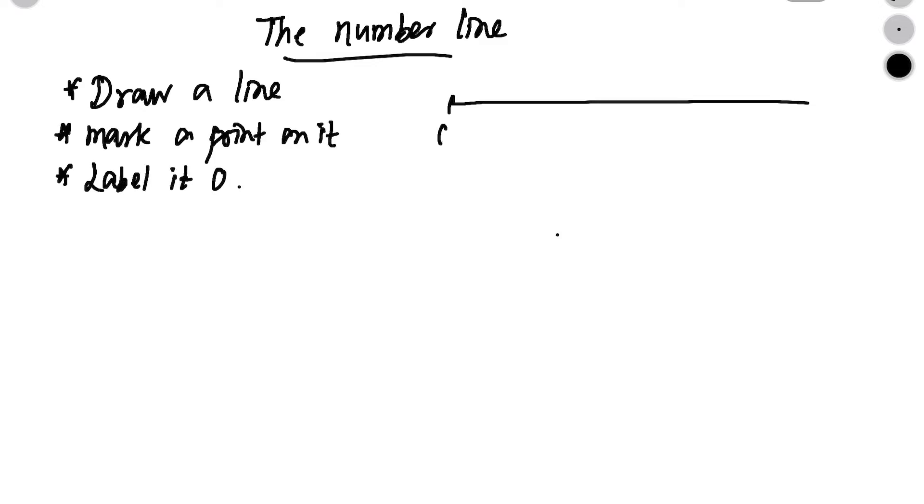Next, we are going to see number line. First, we will see how we will be drawing a number line. So first, draw a line using a scale. Then, in the left-hand side corner, mark a point and label it 0. Next, to the right of 0, mark another point and label it 1.